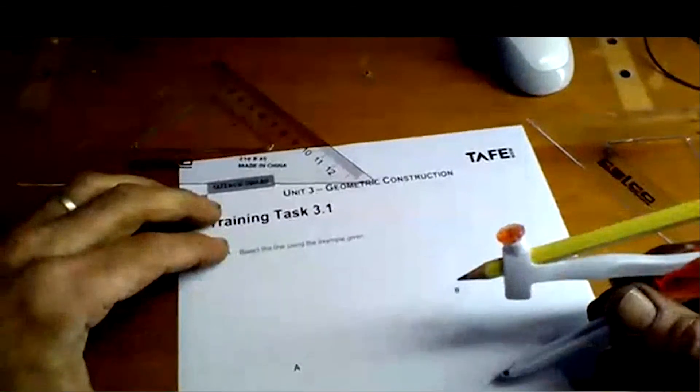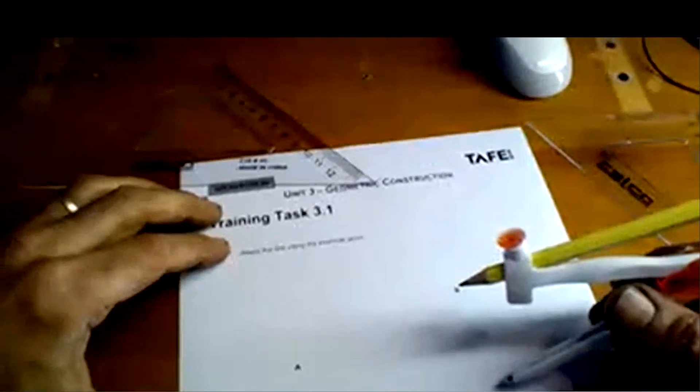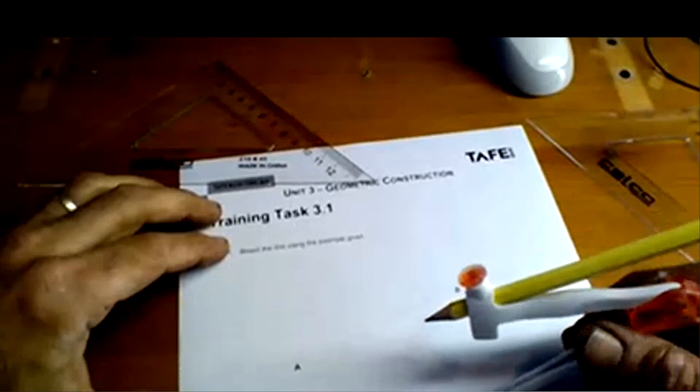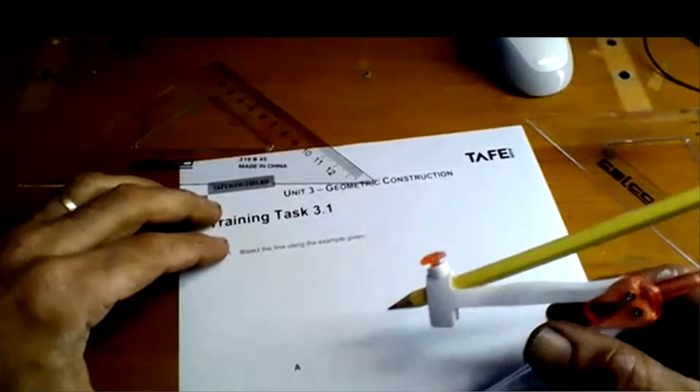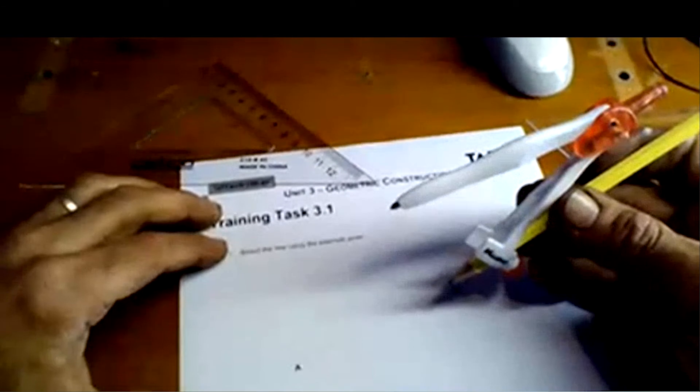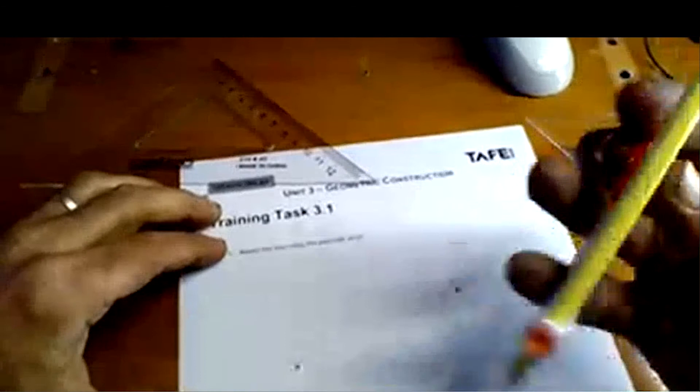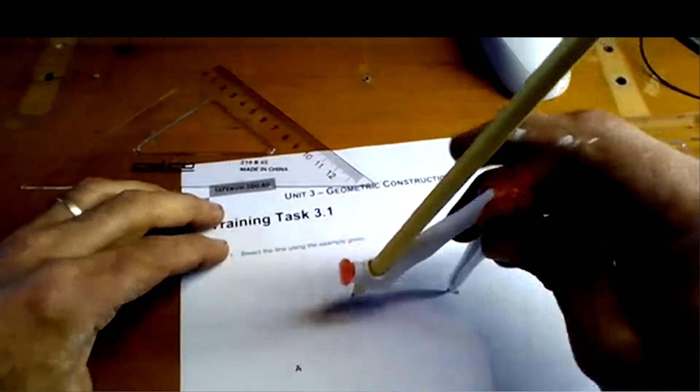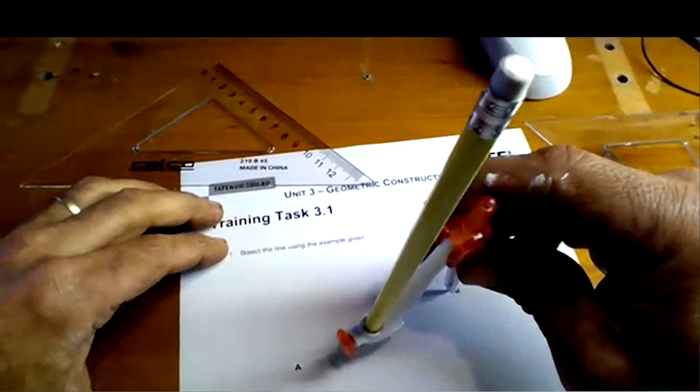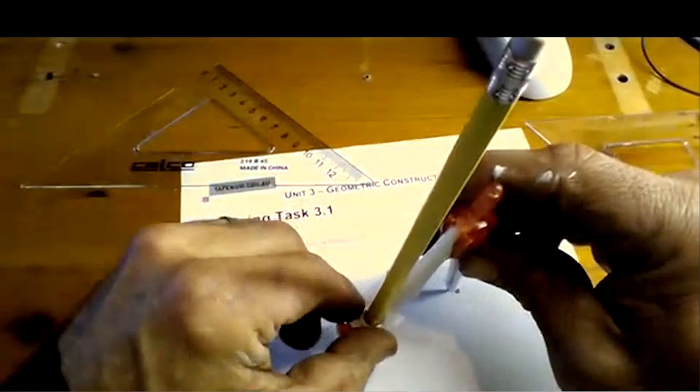Question number one is bisect this line. Now bisecting the line is not just getting a ruler and drawing the midpoint. You're supposed to bisect it with a perpendicular line. To do that we use a compass. The instructions for this are in the student notes. The way to do it is basically to set up the compass so that it's past halfway. The further you are past halfway, the more accurate it's going to be.